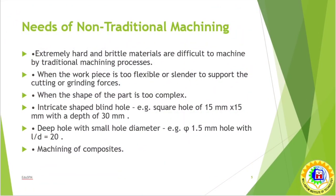Traditional machining methods are often ineffective in machining hard materials like ceramic and composite, or machining under very tight tolerance as in micro-machined components. Extremely hard and brittle materials are difficult to machine by traditional machining. When the workpiece is too flexible to support the cutting or grinding forces, or when the shape of the part is too complex, machining becomes very difficult. Also, blind holes, small hole diameters with high L/D ratio, and machining of composite materials are very difficult in traditional machining.